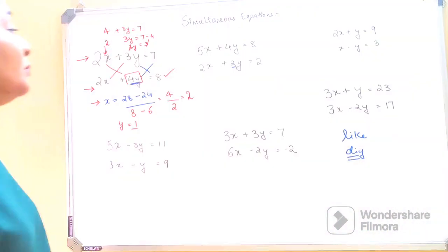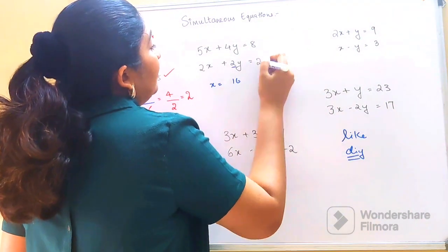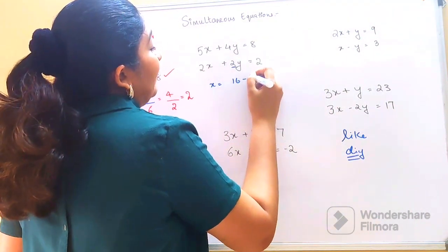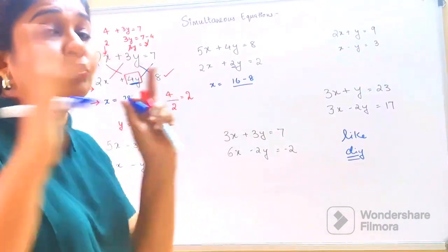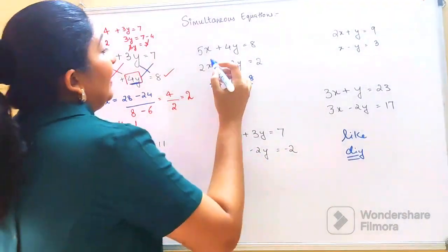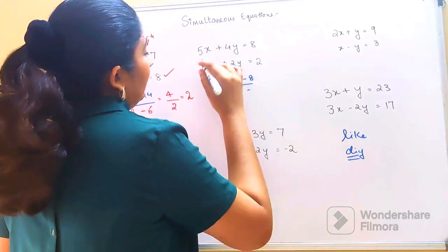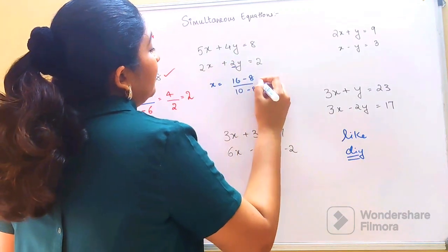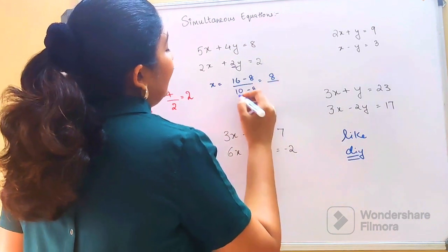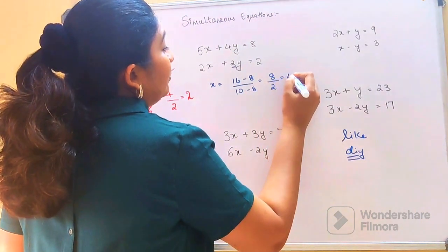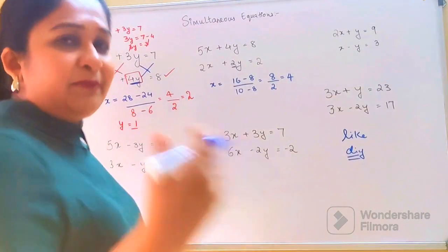This number is again of supreme importance. So: x equals 2 into 8 gives 16, minus 4 into 2 gives 8. Always remember to put the minus sign between the two values. Then: 2 into 5 gives 10, minus 2 into 4 gives 8. So 16 minus 8 gives 8, divided by 10 minus 2 — which is 2 — so the answer for x is 4.